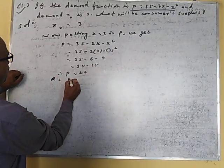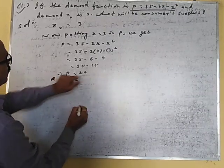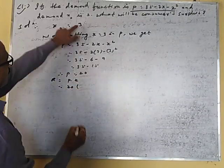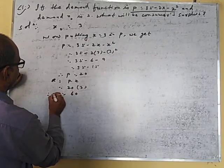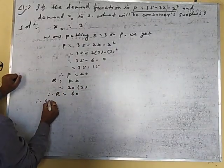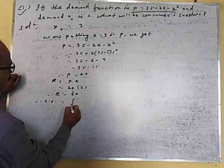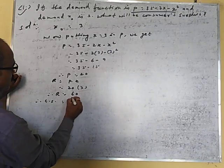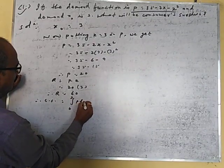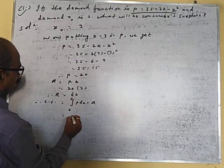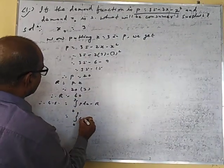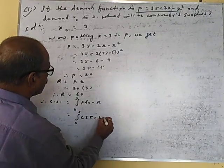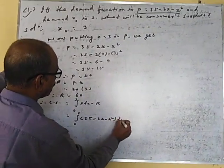We know that R is equal to P into x. So R is equal to 20 into 3, which equals 60. Therefore consumer surplus is equal to integration 0 to 3 of P dX minus R, that is integration 0 to 3 of (35 minus 2x minus x square) dX minus 60.